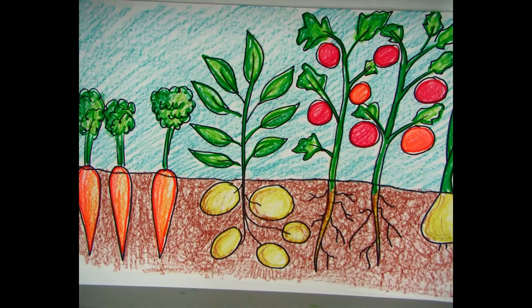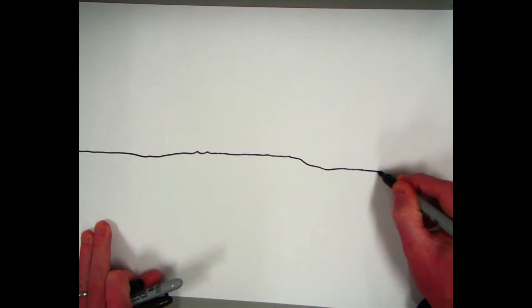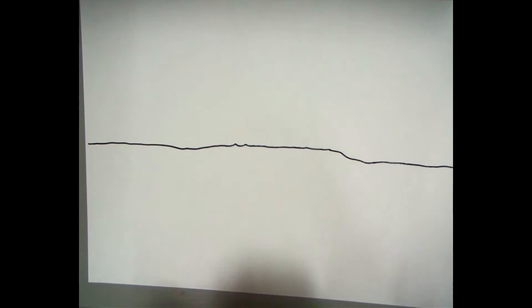To draw this is actually pretty easy. What you'll do is draw in the ground line. Okay, I'll try to make it a little bumpy but leave some room for your roots and your sky and the plants above.